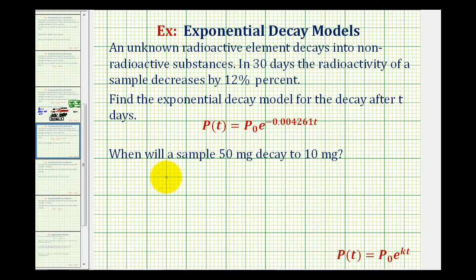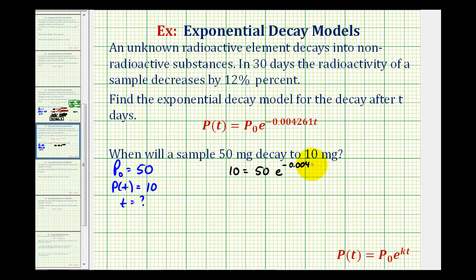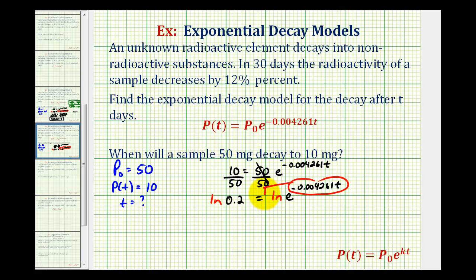Now let's look at the last question: when will a sample of 50 milligrams decay to 10 milligrams? The starting amount p₀ = 50 milligrams and p(t) = 10 milligrams; we want to find t. Setting it up: 10 = 50 · e^(-0.004261t). We isolate the exponential part by dividing both sides by 50, giving 0.2 = e^(-0.004261t). Taking the natural log of both sides and applying the power property: ln(0.2) = -0.004261t · ln(e), which equals 1.